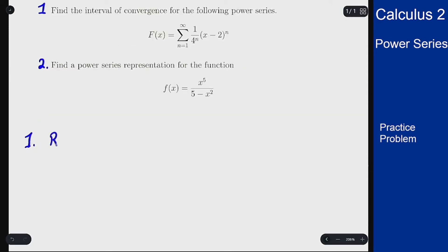For the ratio test, I want to look at the limit as n goes to infinity of the ratio of consecutive terms. The (n+1)st term is (x-2)^(n+1) / 4^(n+1) divided by (x-2)^n / 4^n.